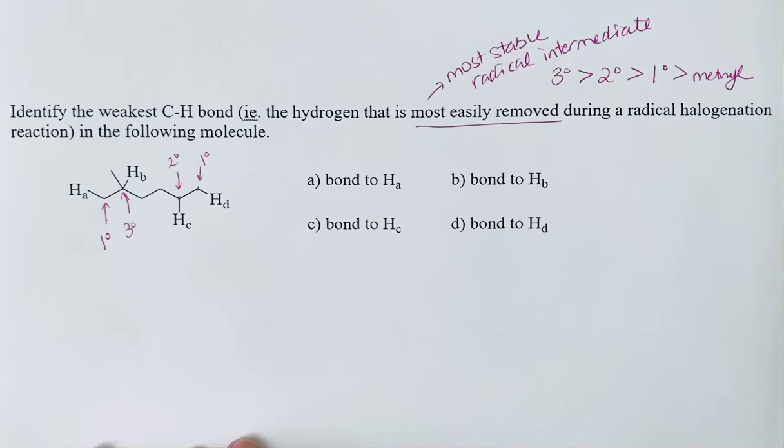So that means this tertiary carbon, this bond between carbon and HB will be the one that is most easy to remove.